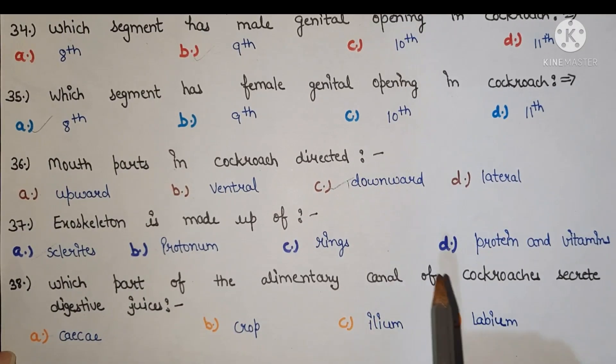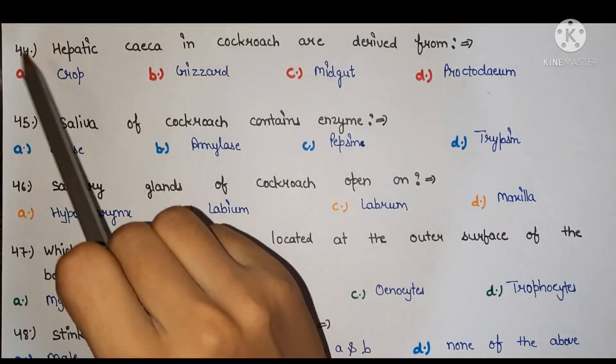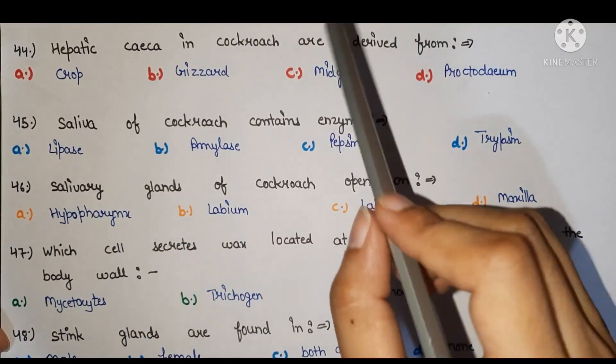Next, hepatic caeca in cockroach are derived from the right answer is C midgut.